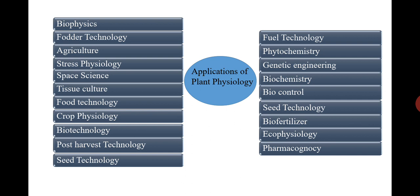Genetic engineering is the science of production of genetically modified organisms, also known as transgenics. For example, Bt cotton or Bt brinjal. Nowadays a number of characters are introduced in fruits or plants — such as increased post-harvest life, increased processing or production rate, and resistance against different types of diseases — by the introduction of a particular gene into that crop, studied under genetic engineering.